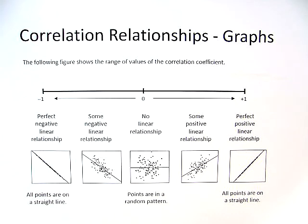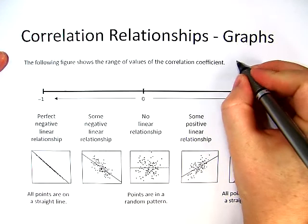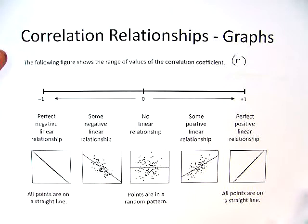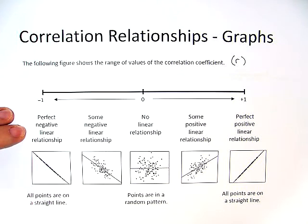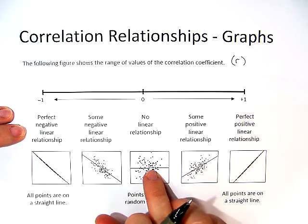Alright, so now we're going to talk about correlation. Now there are two different types of correlations. Right here is called the correlation coefficient. Now the correlation coefficient is commonly known as r. It's used to determine how close the relationship is to being perfect or no relationship.